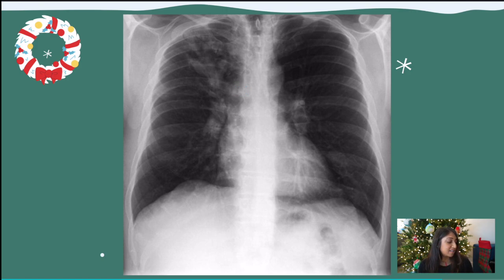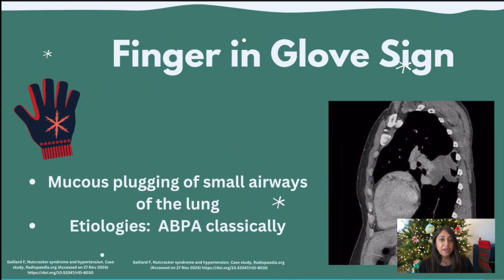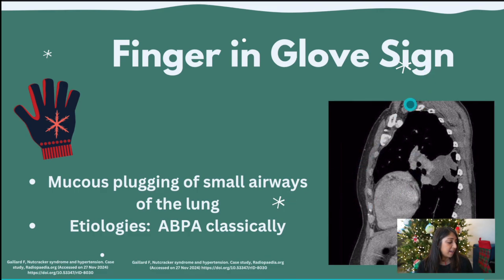These airways are dilated enough to show an opacity on the chest x-ray. Classically this is seen in ABPA, but there are many other etiologies — anything causing severe mucus plugging can produce this appearance. On CT you can see the fingers of the glove clearly — it's a low-attenuation, low-density material within the bronchioles because mucus is not quite fluid but not a solid mass either. This sagittal image shows the chest cut in half.